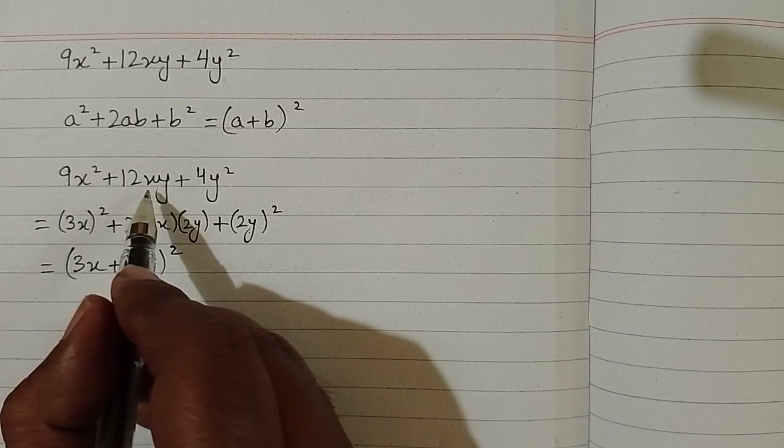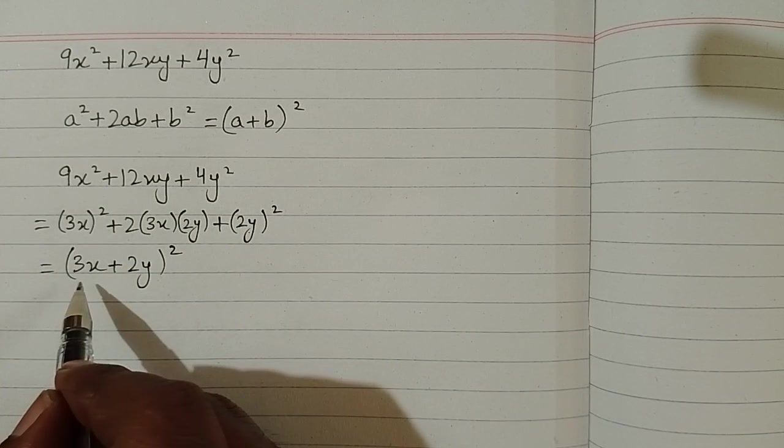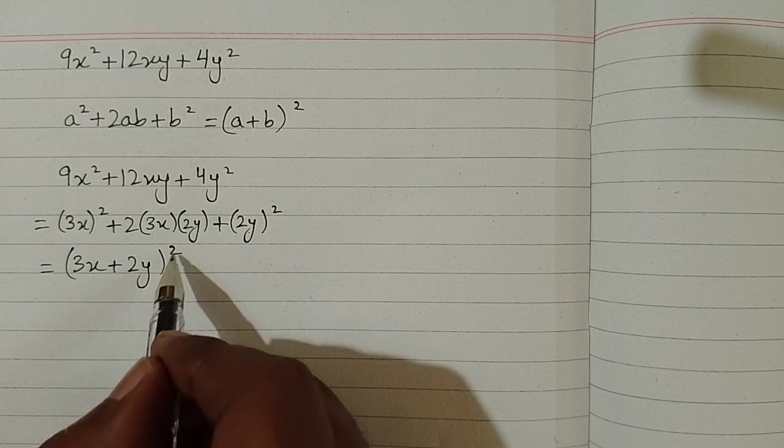So 9x square plus 12xy plus 4y square is equal to 3x plus 2y the whole square.